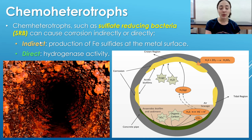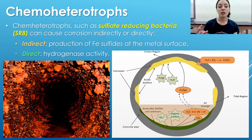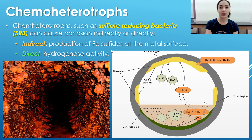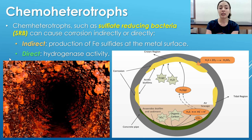The indirect pathway by which SRB cause corrosion involves the production of iron sulfide. SRB reduce sulfate — the oxidized form of sulfur — and produce sulfide, the reduced form. Because their metabolic byproduct is sulfide, iron sulfides form at the metal surface of the steel being corroded, and this causes corrosion of that material.